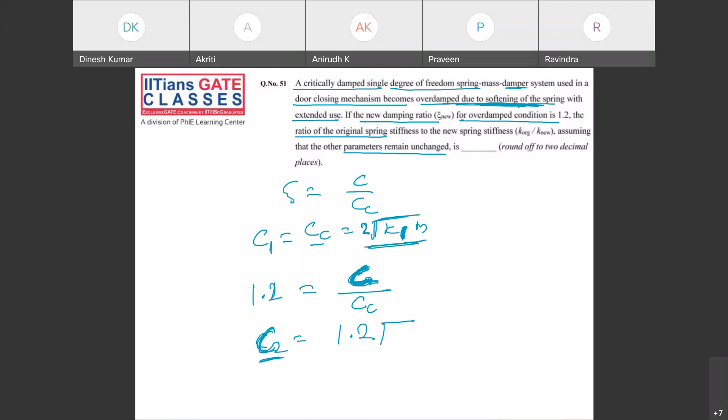What is happening here? Your spring is softening, so that means K is changing but C is not changing. So in this case, if you take your C, which is C₁, equals 1.2 times 2 square root K₂M. So if you take the ratio C₁ upon C₂, you can equate this to this. Here also 2 will be multiplied.